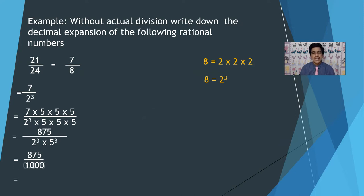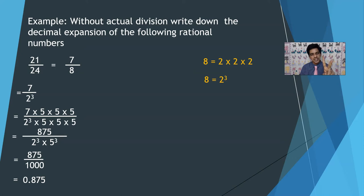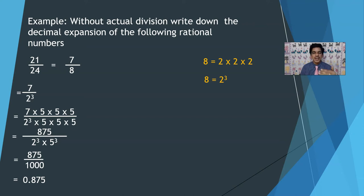Since the denominator is 1000, count three digits from the right side and place the decimal: 0.875. To repeat the steps: take p by q, cancel common factors from numerator and denominator first. Then do prime factorization of the denominator. Make the powers of 2 and 5 equal — if you have 2 power 1 and 5 power 2, multiply to get 2 squared times 5 squared equals 100; 2 power 3 times 5 power 3 equals 1000. Then you can easily write the decimal expansion.